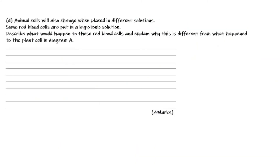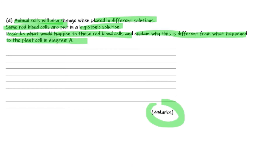In the next question, animal cells also change when placed in different solutions. Some red blood cells are put in a hypotonic solution. Describe what would happen to these red blood cells and explain why this is different from what happened to the plant cell in Diagram A. This is worth four marks.